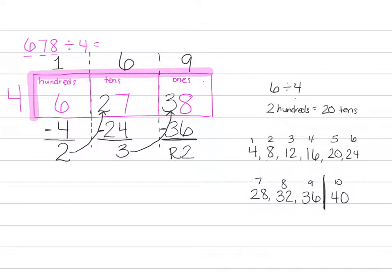What is 678 divided by 4? 678 divided by 4 is 169 in each of the 4 groups and then 2 remaining.